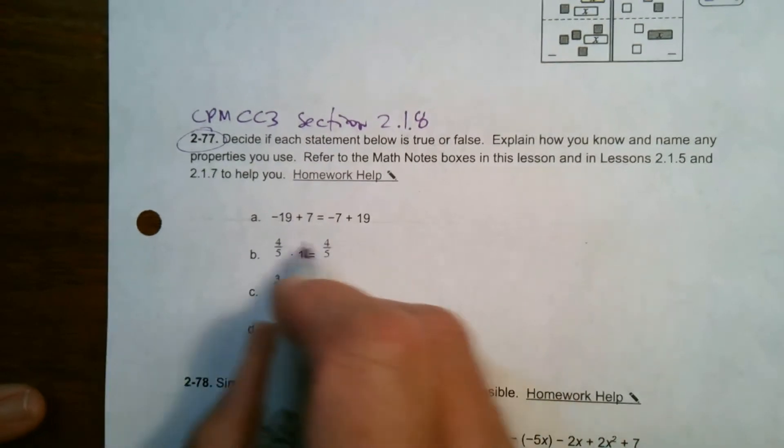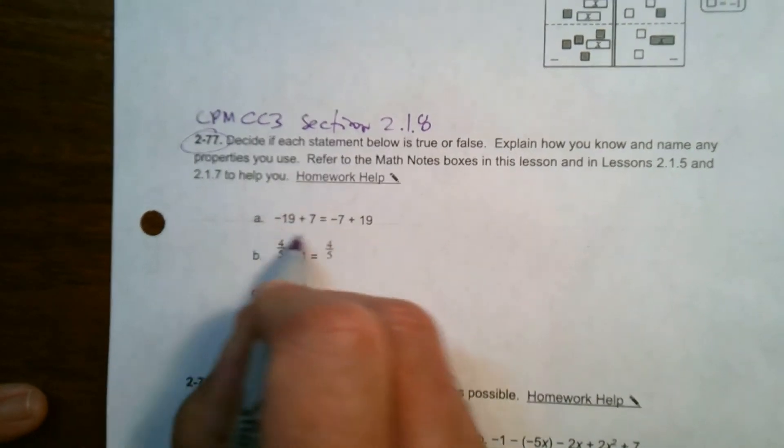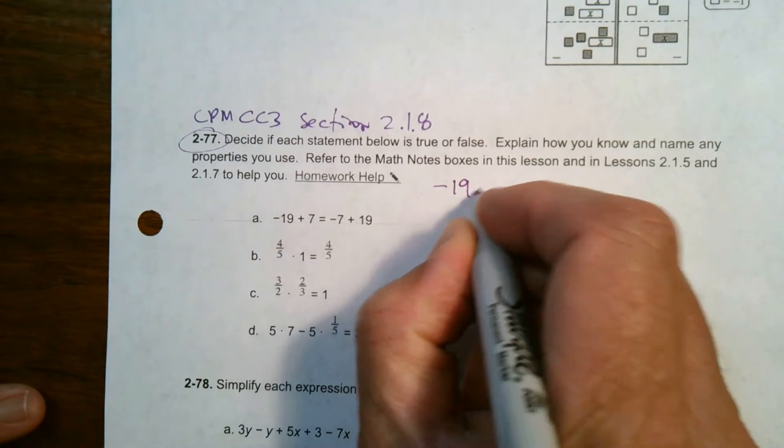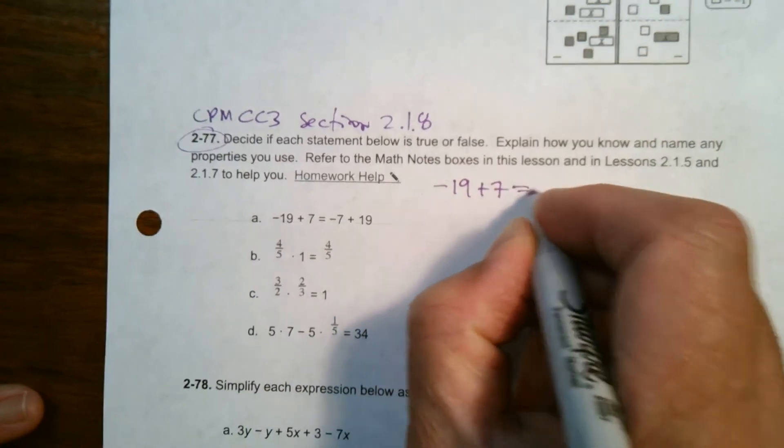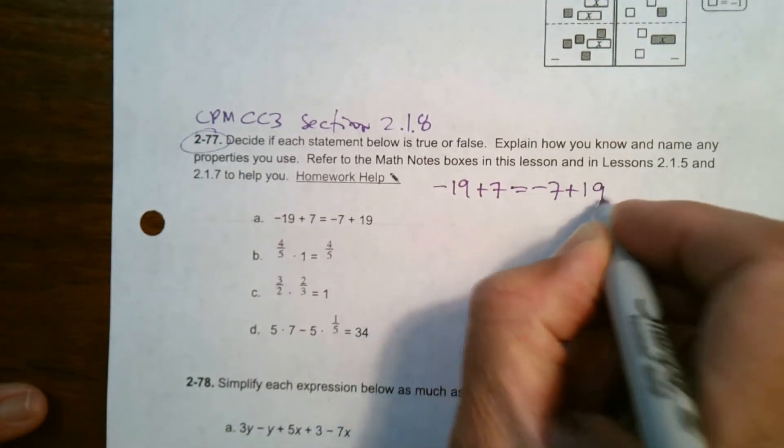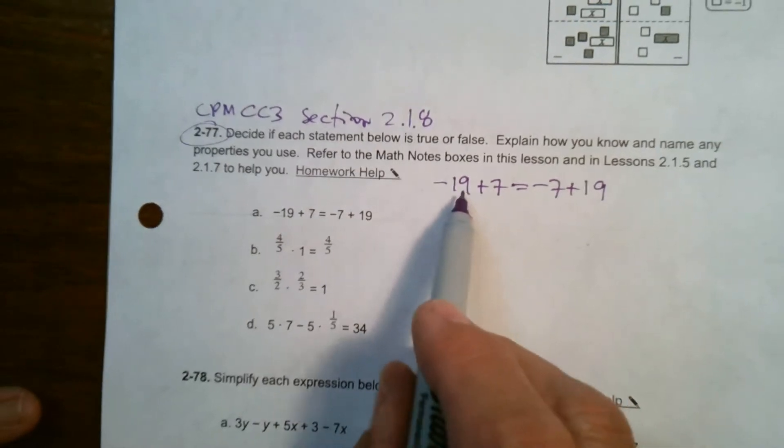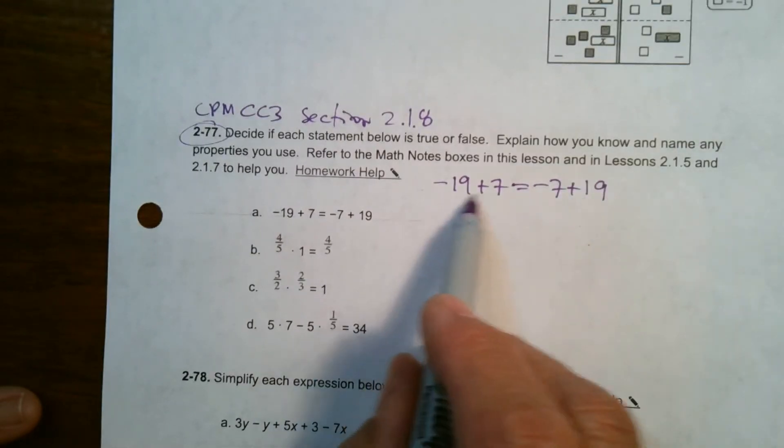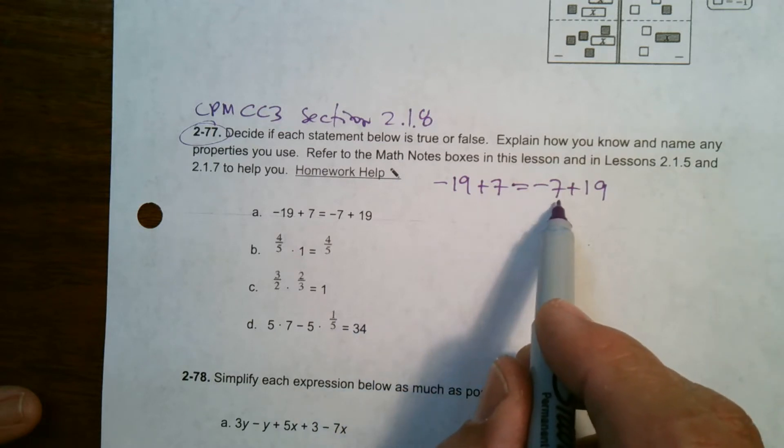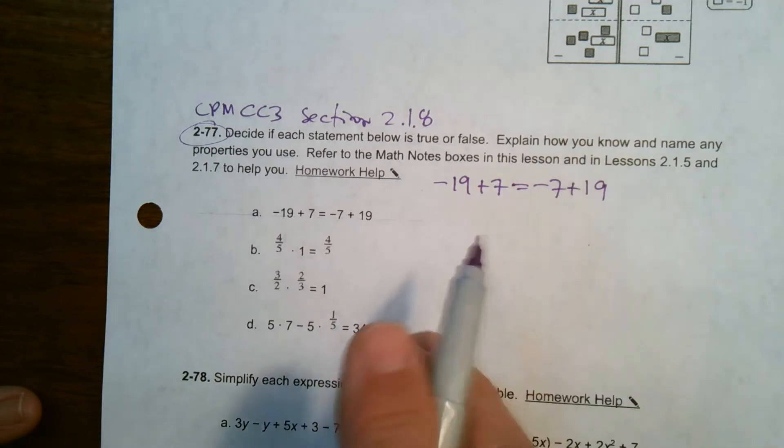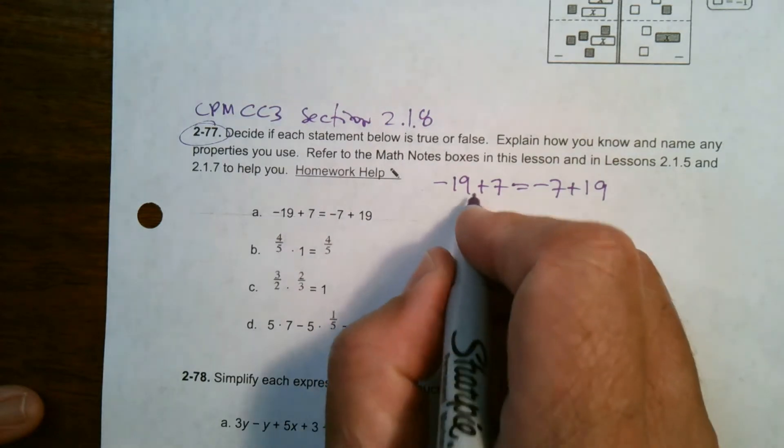So this first one. If I'm going to simplify this, I'm going to rewrite it so we can see it: negative 19 plus 7 equals negative 7 plus 19. At first, you look and think maybe that's the commutative property, but those are different numbers, right? Negative 19, positive 7. Negative 7, positive 19. They're not the exact same numbers just flipped.